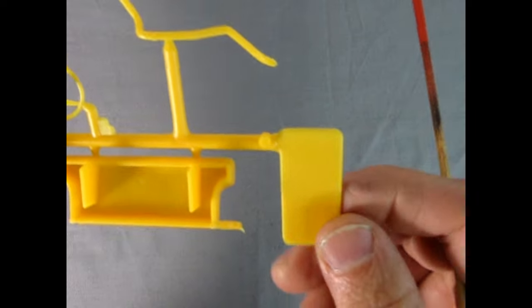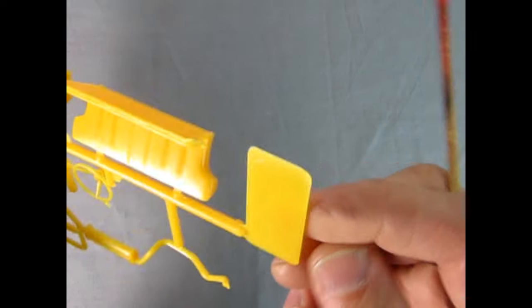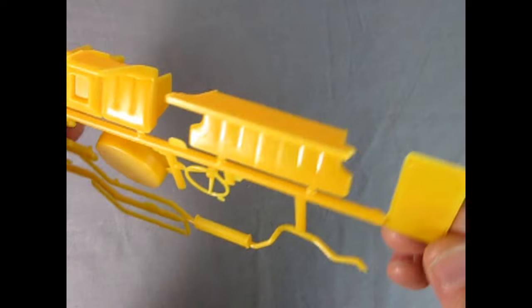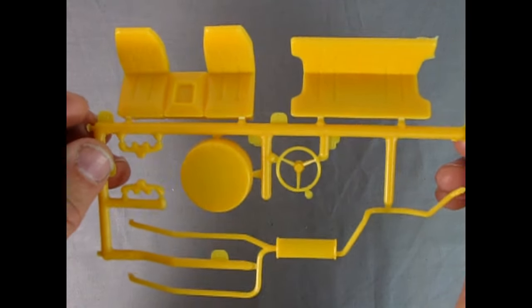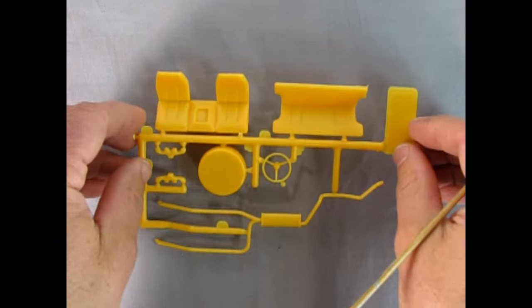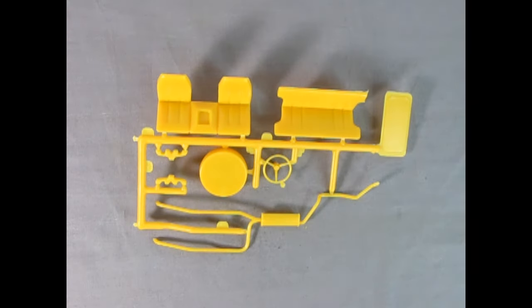This is interesting. This little blade at one point used to say Ertl on it, but now it's completely smooth. So Round Two did not want you to know that this was an Ertl kit, whereas my older one that I did the unboxing on earlier actually did still have the Ertl on there.